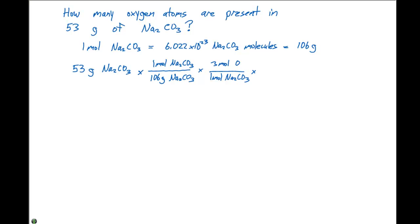For every one mole of oxygen there are 6.022 times 10 to the 23rd oxygen atoms. So if we're trying to determine the number of oxygen atoms, we first need to go from grams of sodium carbonate to moles of sodium carbonate, then moles of sodium carbonate to moles of oxygen, and moles of oxygen to atoms of oxygen.